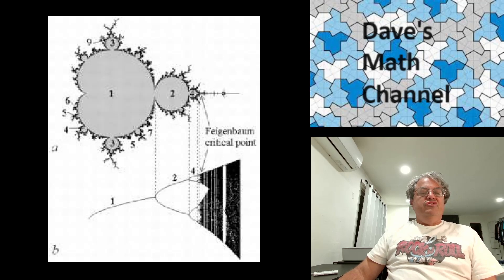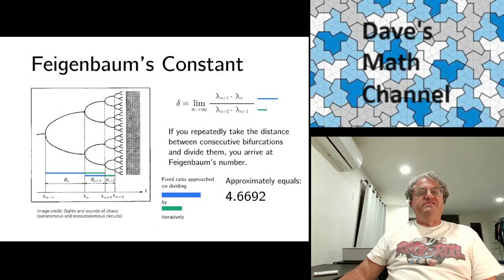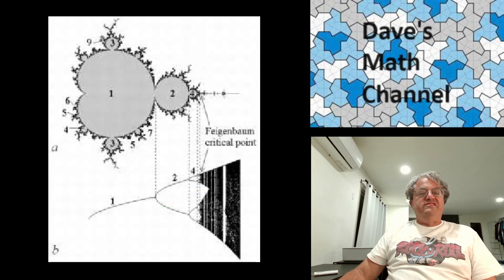And it's not just the Mandelbrot set either. There's multiple, I think even infinitely many examples of chaotic equations that give rise to the same constant, the Feigenbaum constant, 4.6692 approximately. So that is a universal constant. It's a very important number in chaos theory.